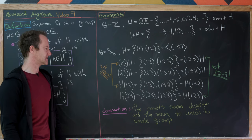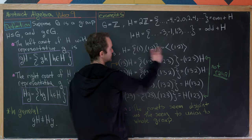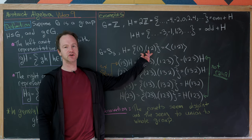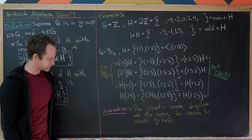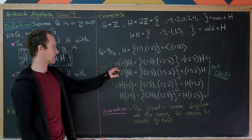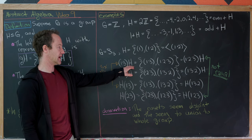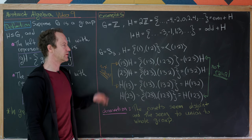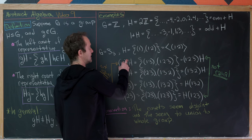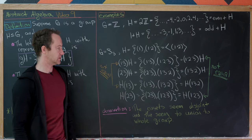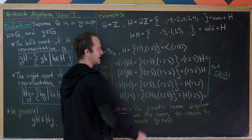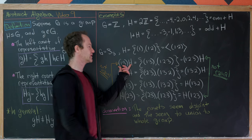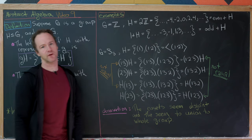Let's look at another illustrative example. Take G = S₃ and H to be the cyclic subgroup generated by the 2-cycle (1 2), which contains the identity and (1 2). Calculating the left coset of (1 3) with H, we get {(1 3), (1 2 3)}, and that's the same thing as the left coset with representative (1 2 3). So notice that two cosets can be equal with different representatives — that's why we use the word representative.